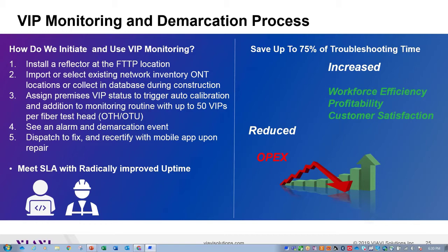You can monitor up to 50 VIP customers per optical test head, and optical test units scale to over 4,000 ports. A dedicated section can handle monitoring while on-demand activation testing and construction testing use remaining ports — supporting all three lifecycle phases simultaneously. Step 4 — view alarms and demarcation reporting. Step 5 — dispatch to fix, recertify with the mobile app, clear the alarm, and analyze the reporting.